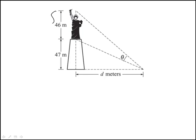We're told that the Statue of Liberty is 46 meters tall and the stand is 47 meters above the ground. An observer is located d meters from the base, and the question is which of the following best expresses the angle theta in terms of d.